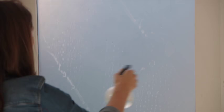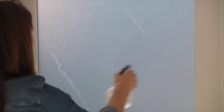When you're happy with its position give the film another spray with the water and detergent solution and start squeegeeing out the bubbles. Keep working it until all of the bubbles are gone.